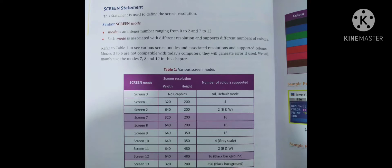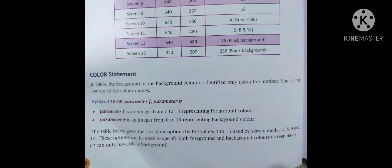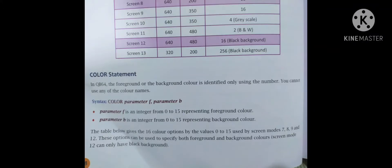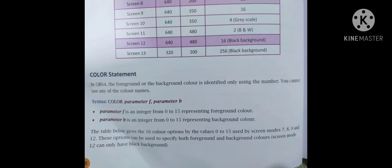Next is the color statement. In QB64, the foreground and background color is identified only using a number — you cannot use color names. The syntax is: COLOR F, B, where F is the foreground color and B is the background color.